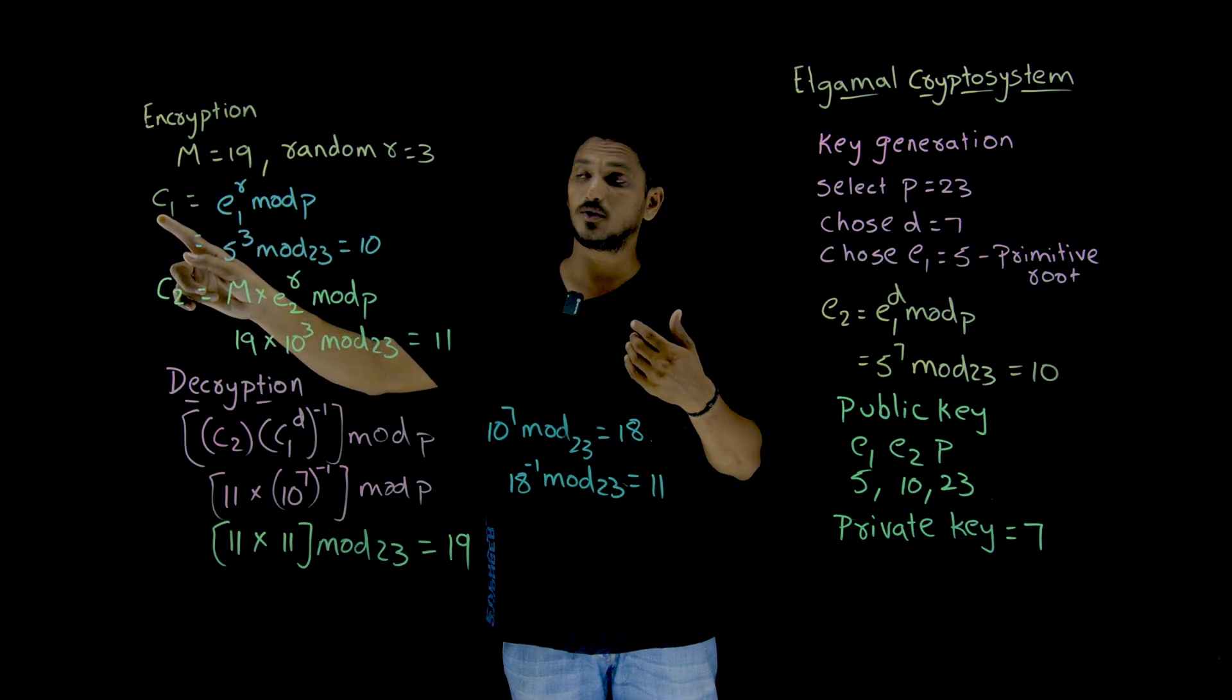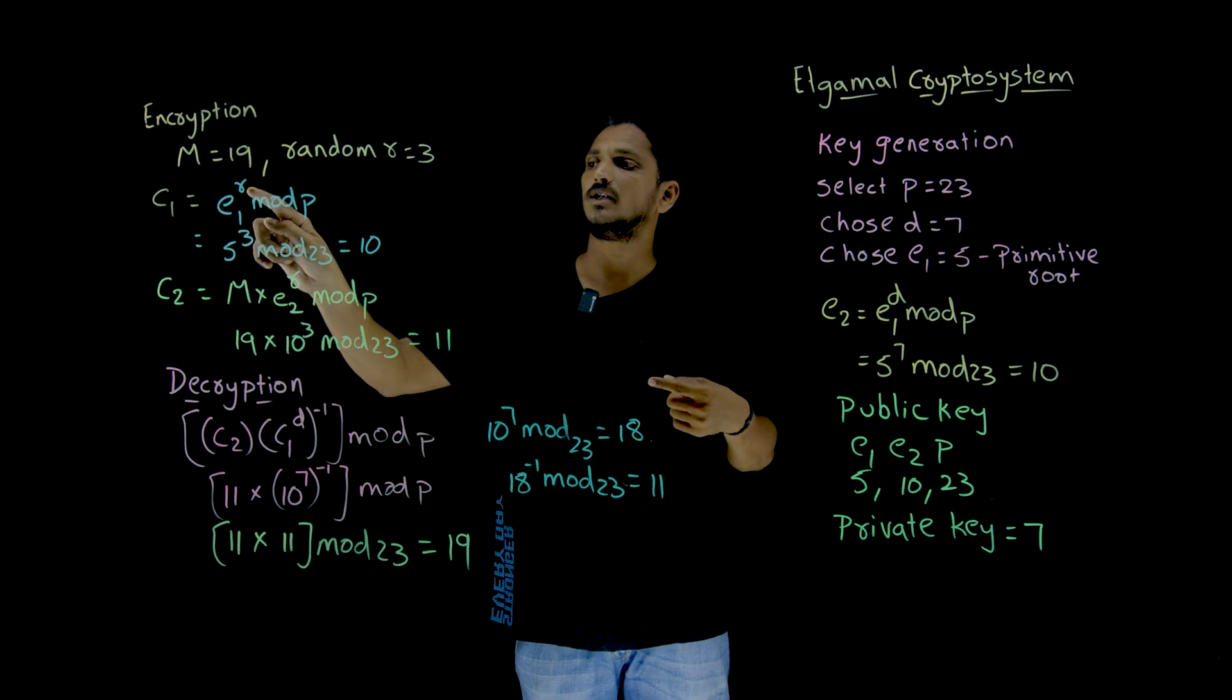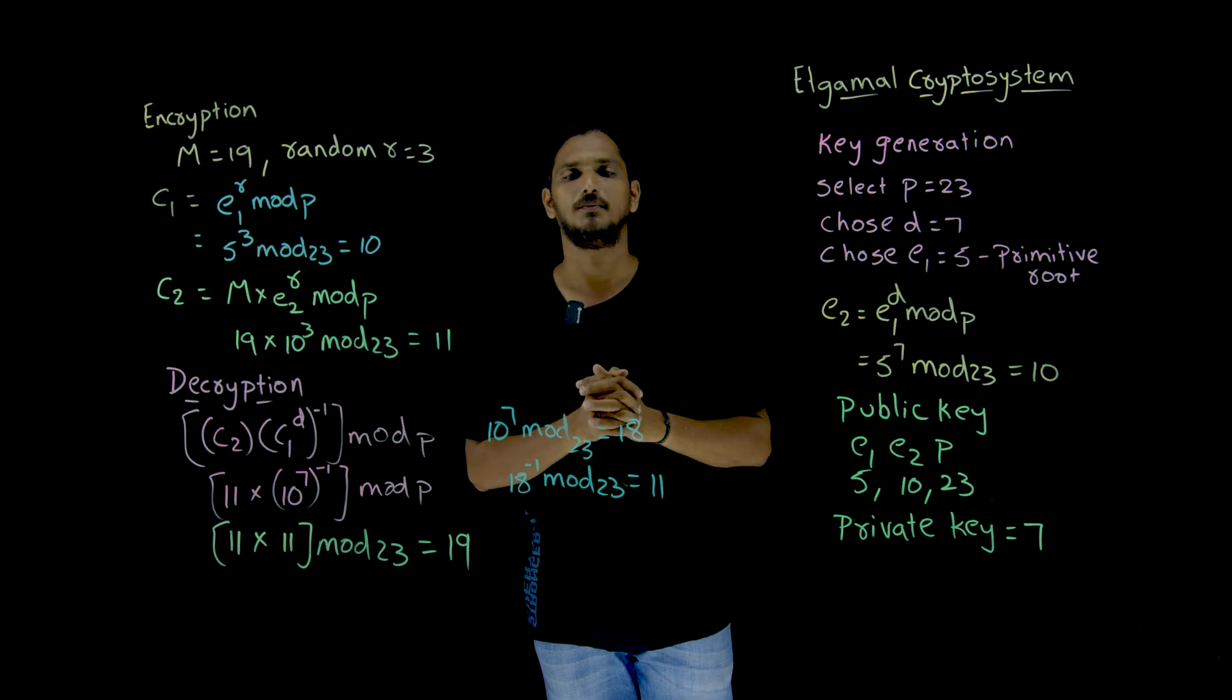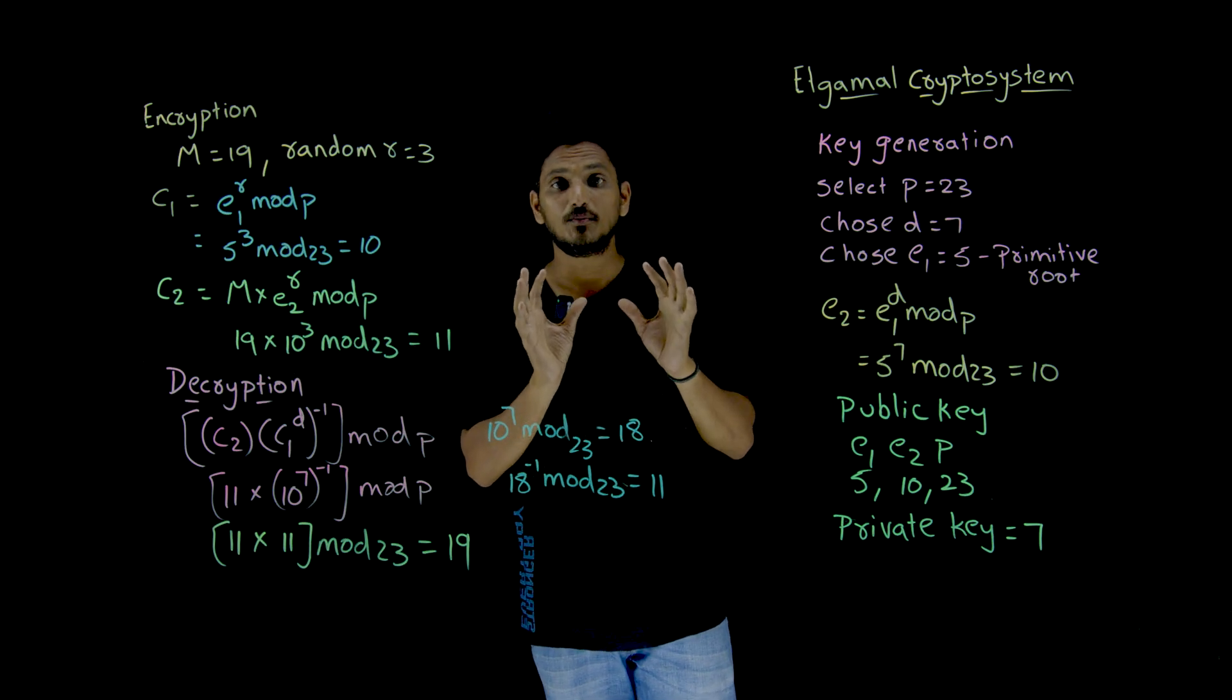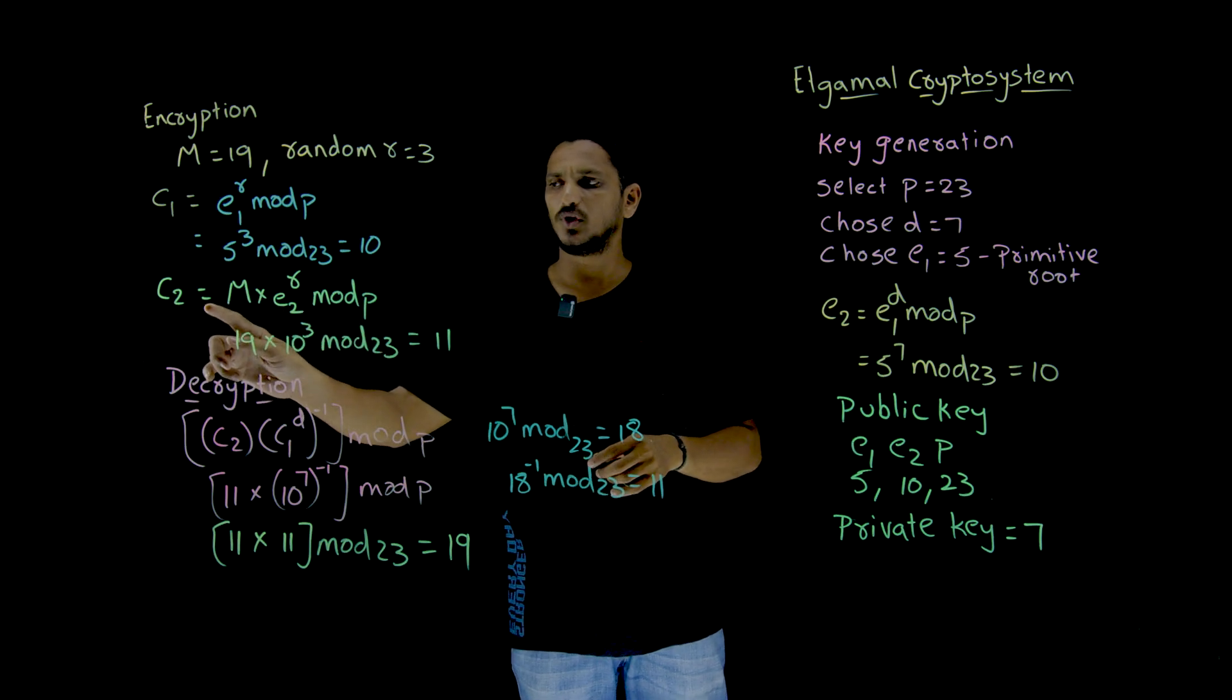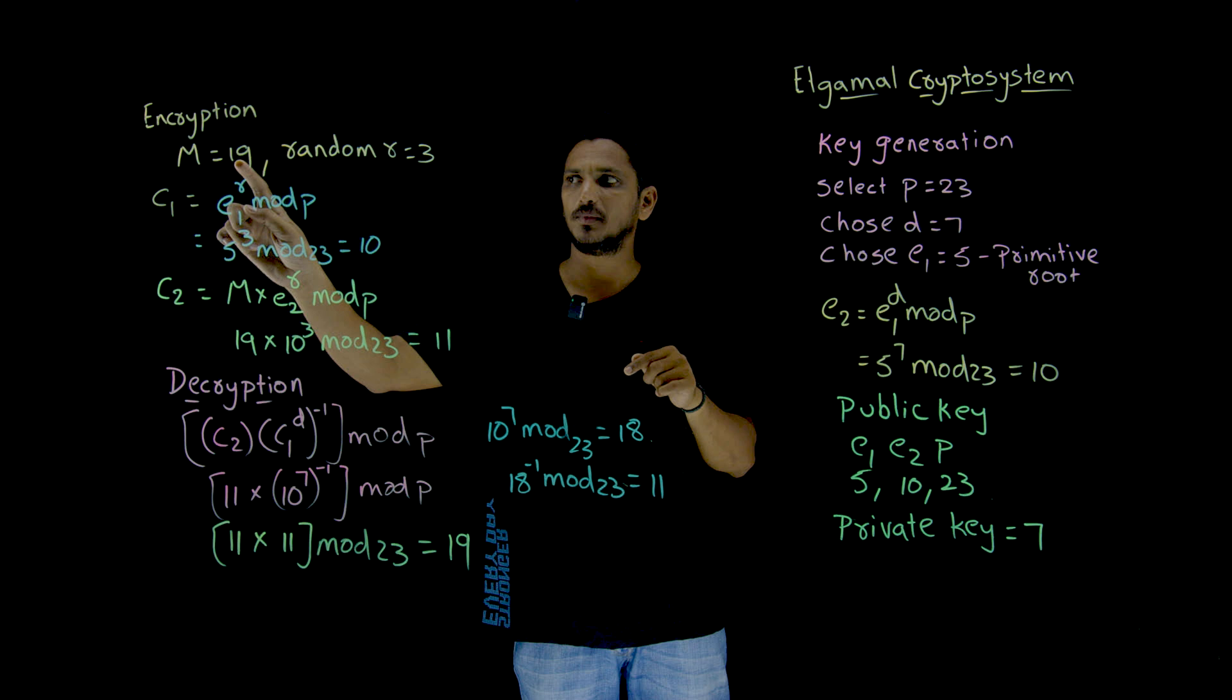If the hacker knows C1 and E1 value, he is unable to generate this R value because it is a logarithmic problem. And the actual message masking happens here. C2 equal to, this is where the actual masking happens. M is our message, 19 multiplied by E2 power R.